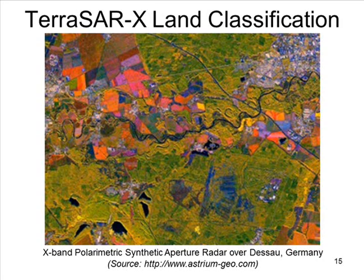For example, this is a land surface classification in Germany using an X-band polarimetric synthetic aperture radar, the so-called TerraSAR radar. From that, you can determine what kind of crops are growing, whether land is forested or not, whether land is urban or not. This is extremely important from the standpoint of land management.